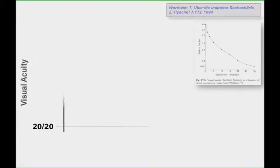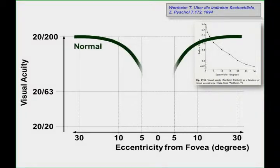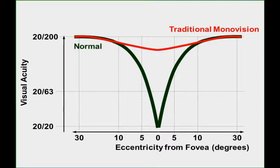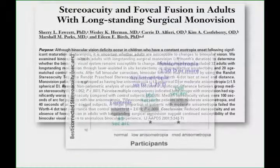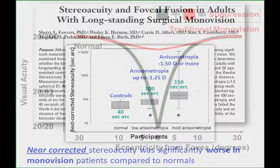If we consider the difference in visual acuity between the two eyes in traditional monovision, while the dominant eye sees 20/20 centrally, the non-dominant eye sees between 20/100 and 20/200 at distance. With this degree of image disparity, fusion is not possible, and therefore suppression is required in order to perceive a single clear image. This explains the relatively low tolerance and also the loss of stereo acuity in traditional monovision.